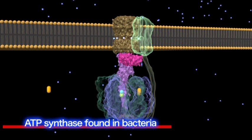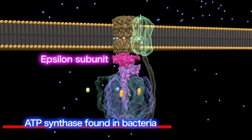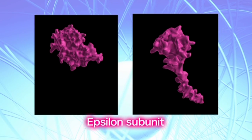This CG represents the regulatory mechanisms of ATP synthase found in bacteria. ATP synthase contains an epsilon subunit. It was already known that this epsilon subunit comes in two conformations: contracted and extended.